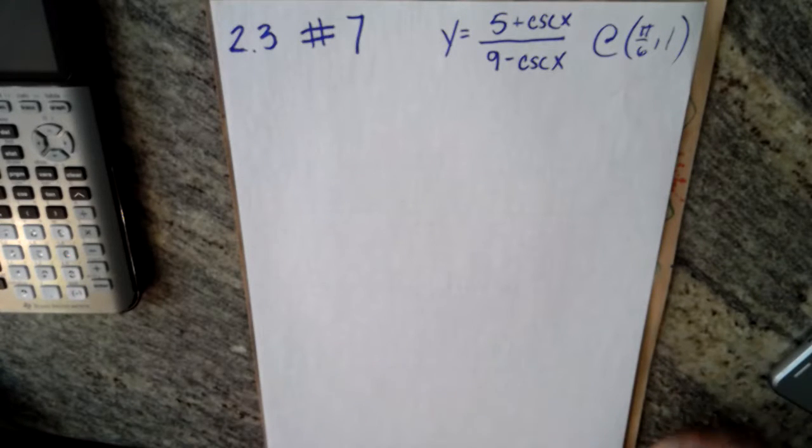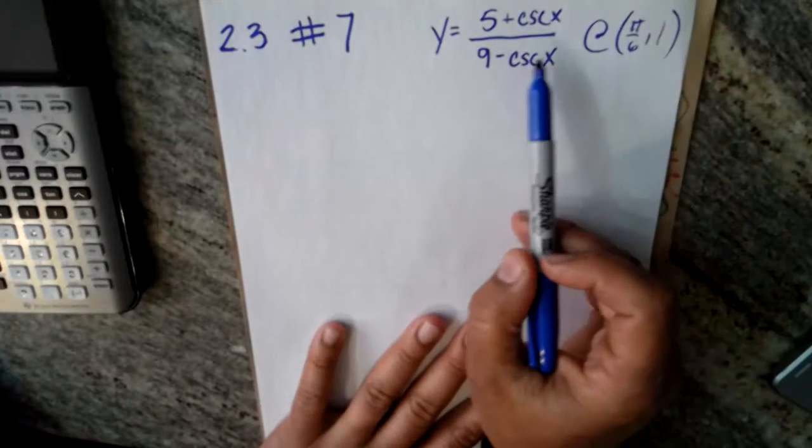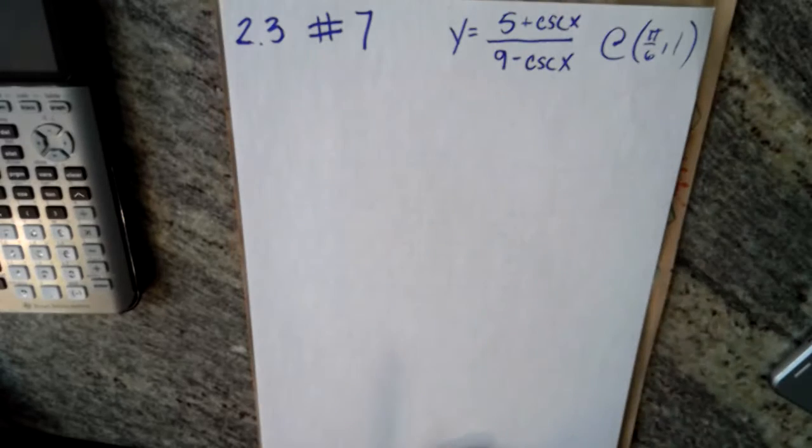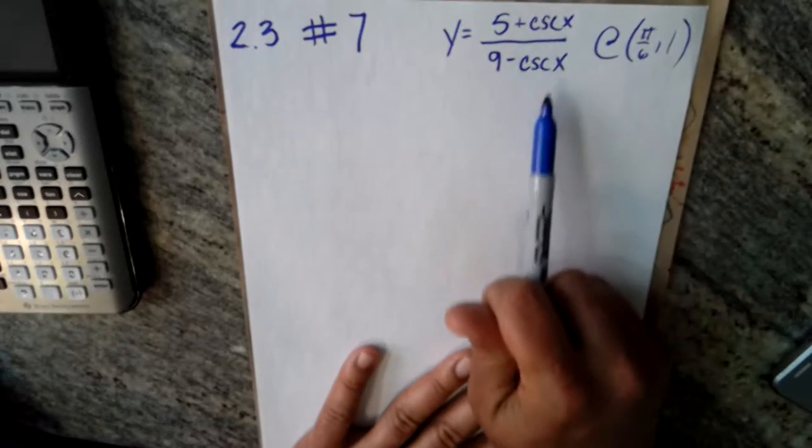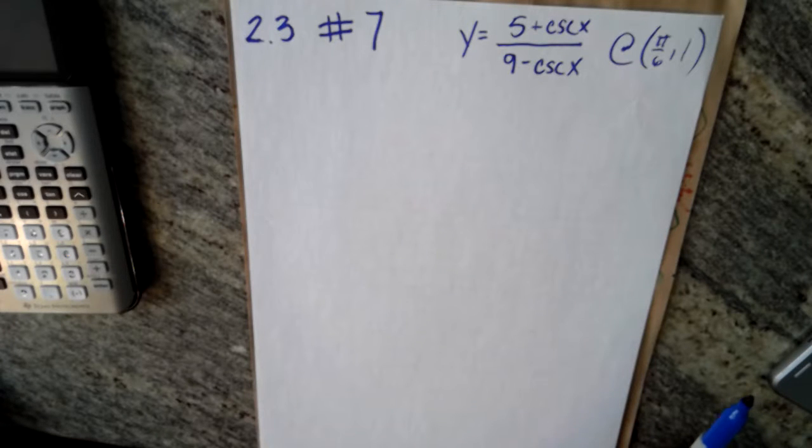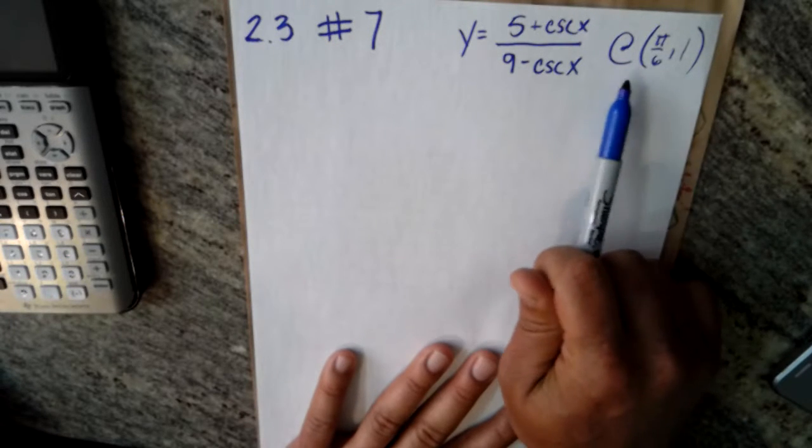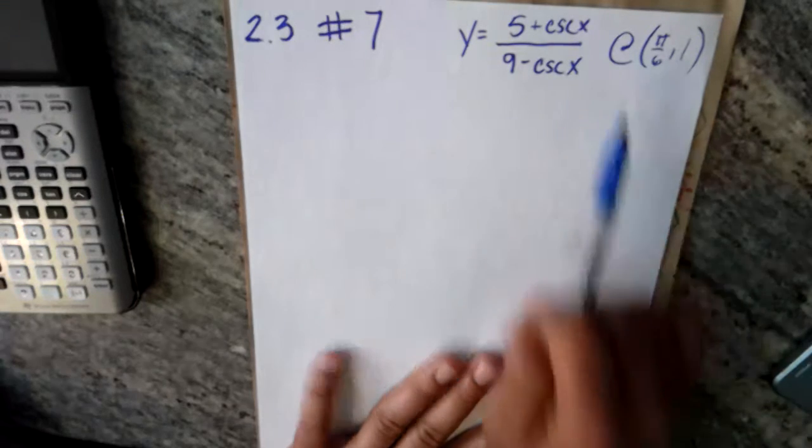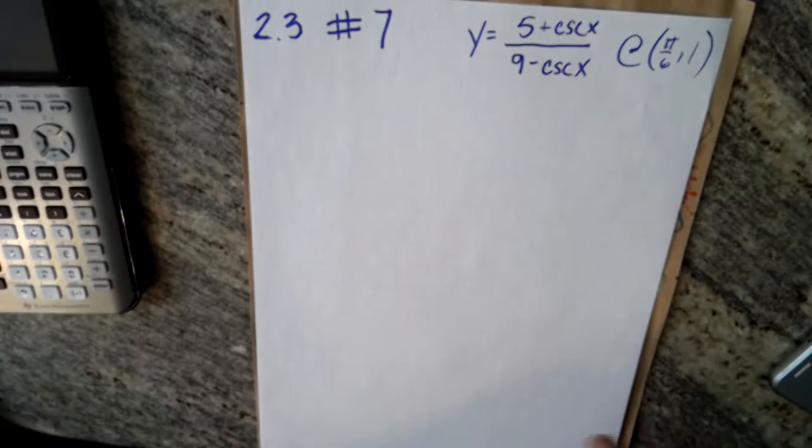Alright boys and girls, welcome back to the drive through. We're here with number seven, two three. This is teaching us about the quotient rule, about taking the derivative of cosecant which we did in the previous video. It's also asking us to find the slope of a tangent line at a given point.